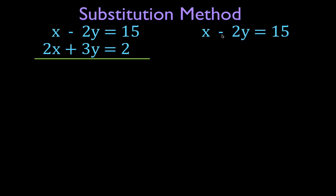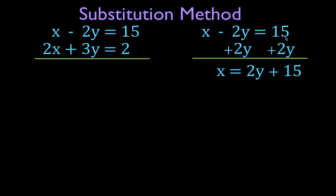So the easiest thing to do in this case would be to solve this equation for x. I'm going to write this equation down and solve this equation for x. I have x minus 2y. I'm going to add 2y to both sides. That will bring this 2y over to the other side. Add 2y to both sides, and you can see we now have x equals 2y plus 15. The first step is to solve one of the equations for either x or y. We chose to solve this equation for x, and we have x equals 2y plus 15.